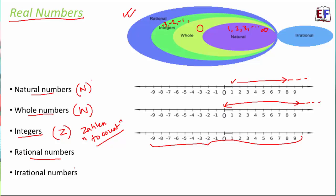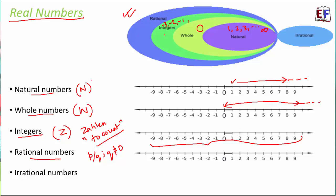Rational numbers are ratios — one-half, two-thirds, three-fourths — they are all rational numbers. A rational number is defined as any number in the form p/q where q ≠ 0. Any number we've discussed can be written as rational: 3 = 3/1, −3 = −3/1, 0 = 0/1. So natural numbers, whole numbers, and integers are all rational numbers. Between any two integers on the number line there exist many rational numbers.